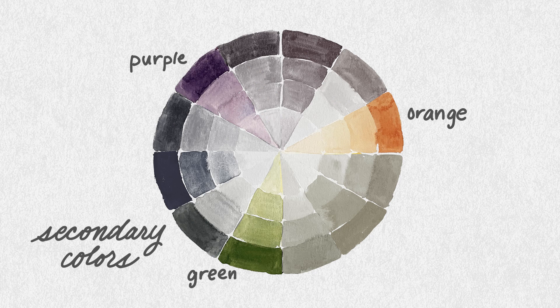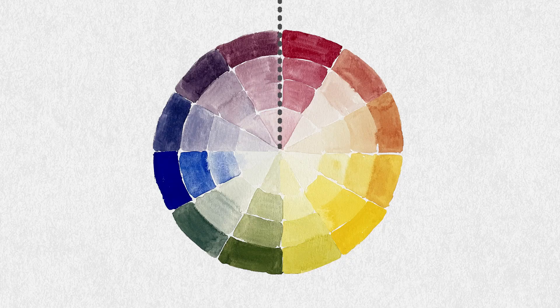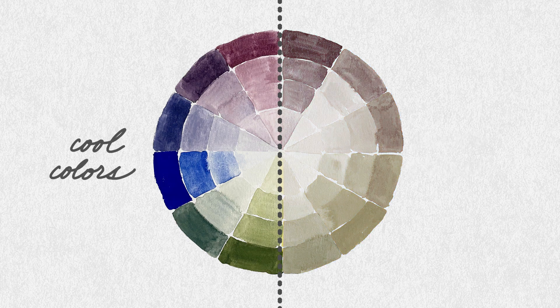From there, you can mix primary colors to create secondary colors — green, purple, and orange. And when you mix a primary and a secondary, you get tertiary, which are the hyphenated color names. These mixtures of colors create the color wheel. And if you were to split it down the middle, you'd get warm colors on the right and cool colors on the left.